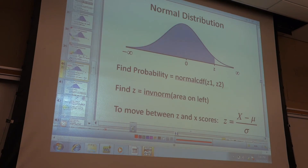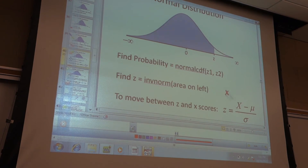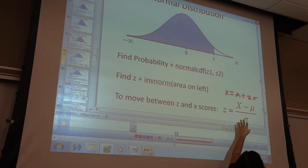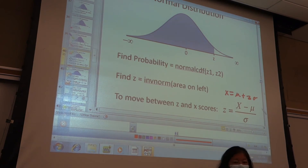To get back and forth between z-scores and x-values, that's just a calculation — no special calculator functions. Use z = (x − μ) / σ, or rearranged: x = μ + z·σ. It's the same formula, just multiplied by sigma and adding μ to both sides. You can have both formulas on your notes.